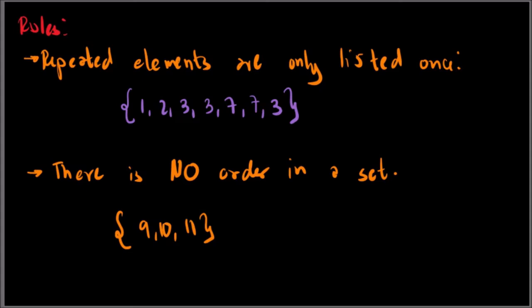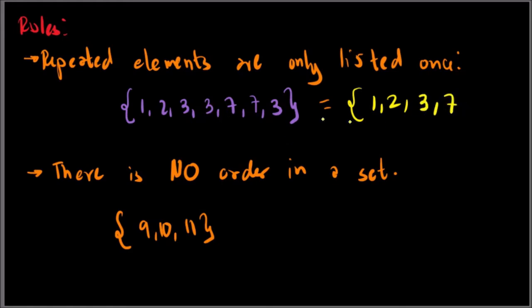So the rules: if you are going to list a set, repeated elements are only listed once. For example, if we have the set {1, 2, 3, 3, 7, 7, 3}, we simplify it — 3 is repeated three times so we write it only once, and 7 is repeated twice so we write it only once — giving us {1, 2, 3, 7}. There is no need to write the same element repeatedly.